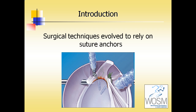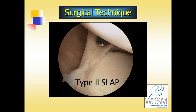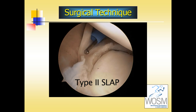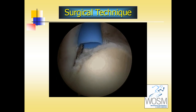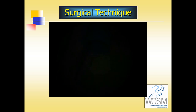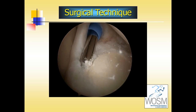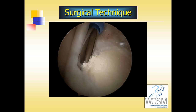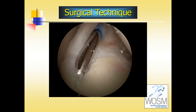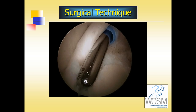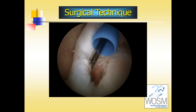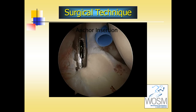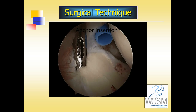The surgical technique has evolved to rely today on the use of surgical suture anchors. This arthroscopic video shows a type 2 SLAP lesion. We first prepare the superior glenoid and separate it from the superior labrum. A shaver is used to debride the tissue and generate a healing response. Only by doing this can we hope that the superior labrum, once tacked down, will heal appropriately to the glenoid rim.